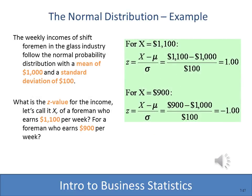Here we compute a Z-score. The weekly incomes of individuals have a mean of 1,000 and a standard deviation of 100. We want the Z value for a particular foreman who earned $1,100 per week. Using X minus mu divided by standard deviation: (1,100 minus 1,000) divided by 100 gives exactly Z = 1. Similarly, a foreman earning $900 would give Z = -1 — one standard deviation below the mean.